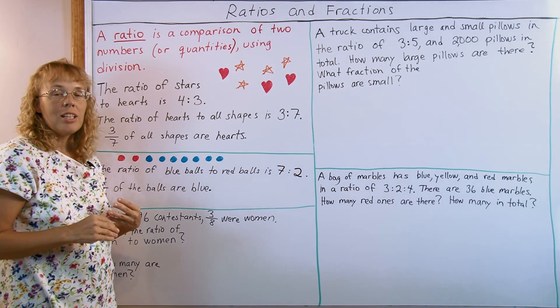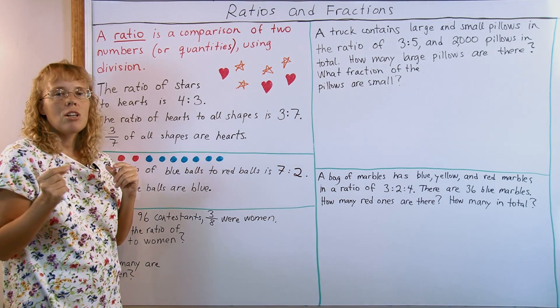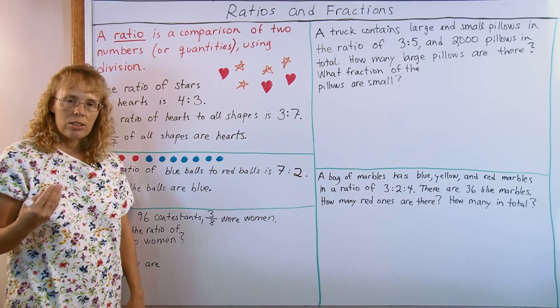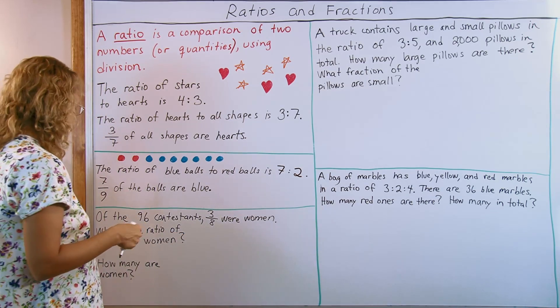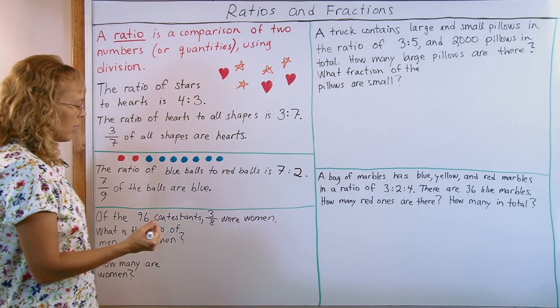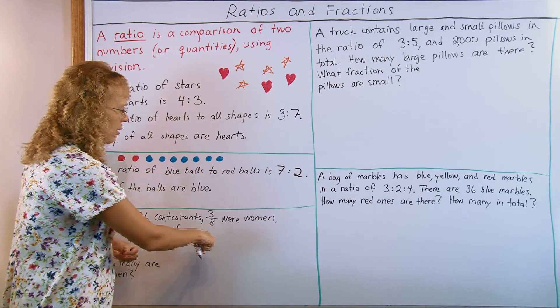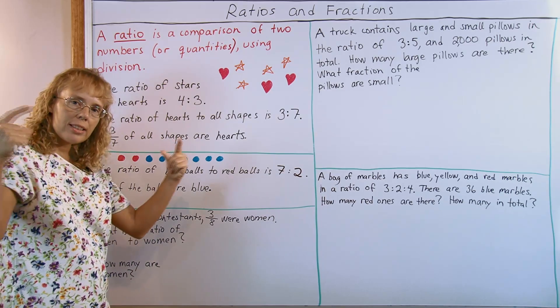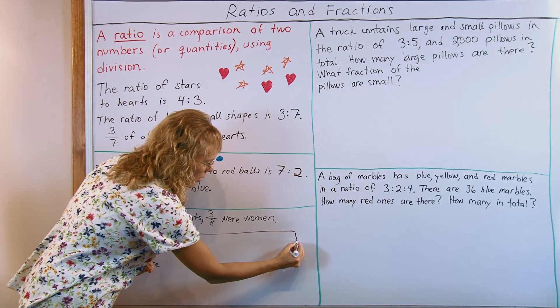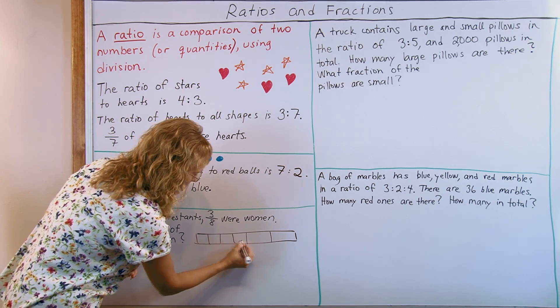In the next problem, I want to show you a very powerful idea: a diagram, a bar diagram or block diagram, that helps us solve any kinds of word problems that involve ratios and fractions. Here's one example. Of the 96 contestants, 3 eighths were women. What is the ratio of men to women, and how many actually are women? I like to solve these kind of problems by making a diagram which basically shows us the ratio. It says 3 eighths were women, so the contestants were divided into 8 parts and 3 of those parts are women. I'm going to draw a bar here and then divide that into 8 parts: 2 parts, then 4 parts, then 8 parts.